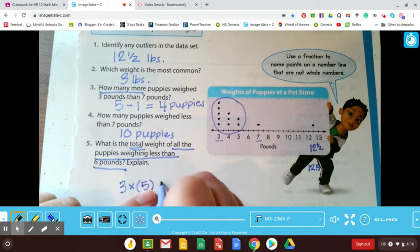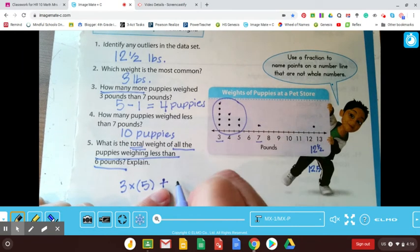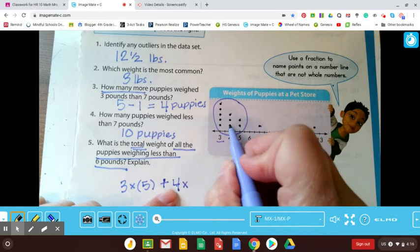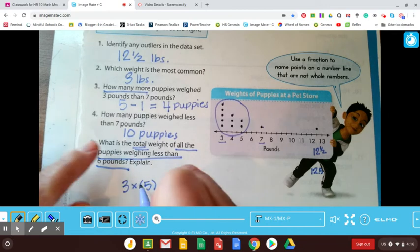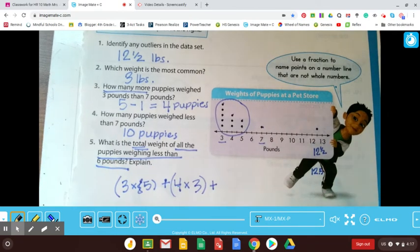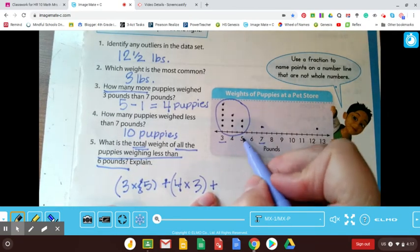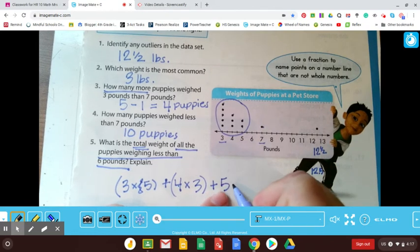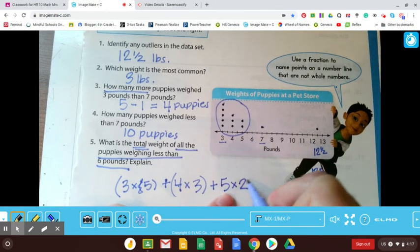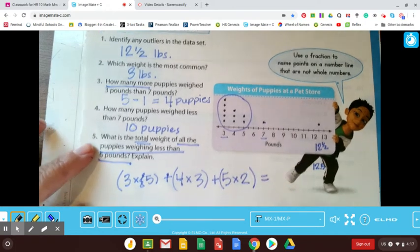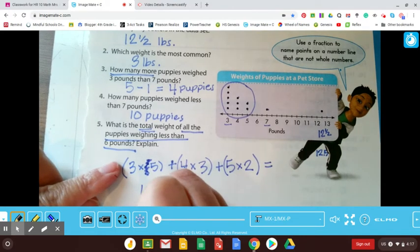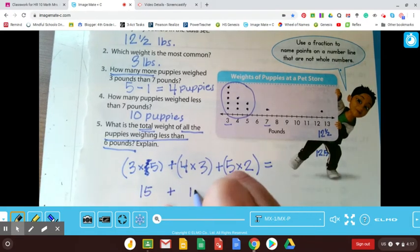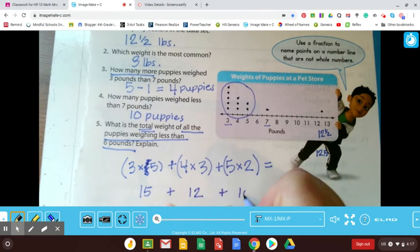And then I have plus, I have four times one, two, three, right? Plus, I guess I can, I really should have my parentheses over there, plus five pounds, right? And there was two of those. And what does that give us? So I have three times five would be 15, plus four times three would be 12, plus five times two, which is 10.